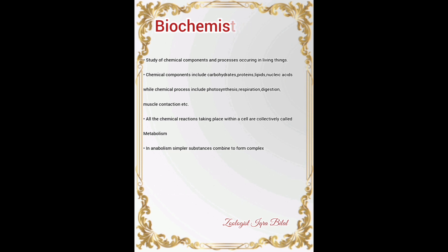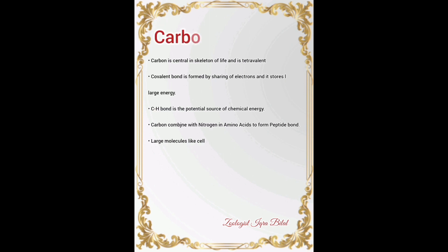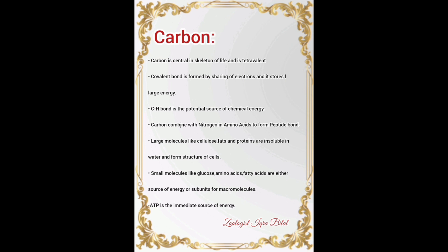Carbon is central to the skeleton of life and is tetravalent, meaning it has four valencies and can form four covalent bonds with other compounds. Covalent bonds are formed by sharing of electrons and store large amounts of energy. The carbon-hydrogen bond is the potential source of chemical energy — when this bond breaks, a large amount of energy is released. Carbon combined with nitrogen in amino acids forms a peptide bond.